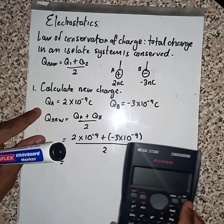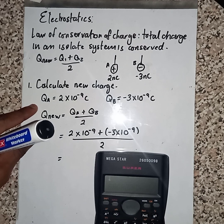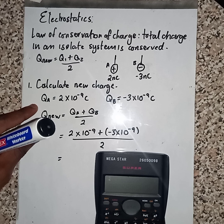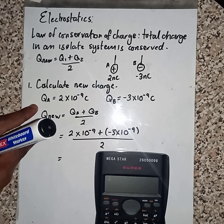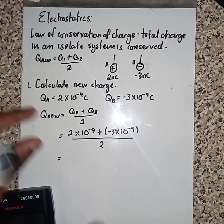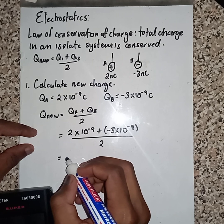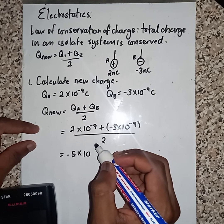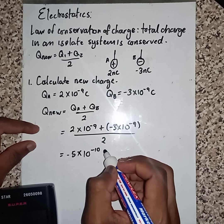We take the calculator at this point. We have 2 times 10 to the power of minus 9 plus negative 3 times 10 to the power of minus 9, then divide everything by 2. We are going to get the new charge, which is minus 5 times 10 to the power of minus 10 Coulombs.